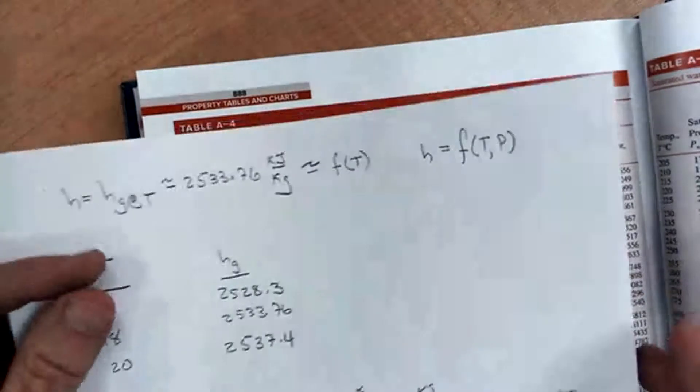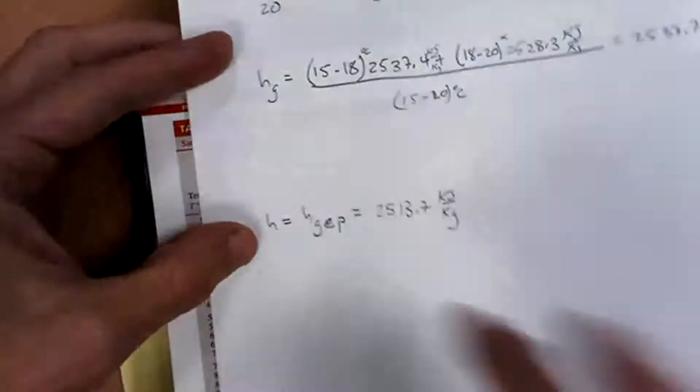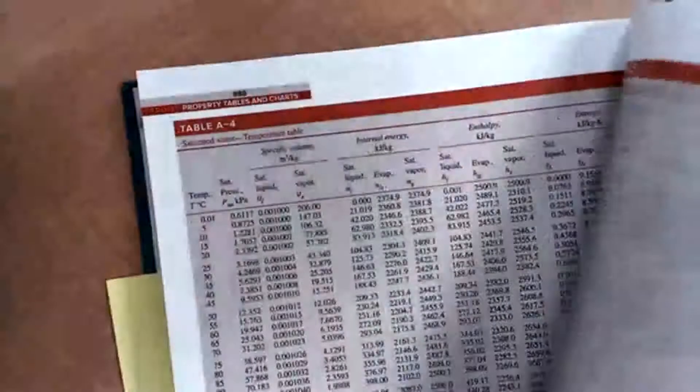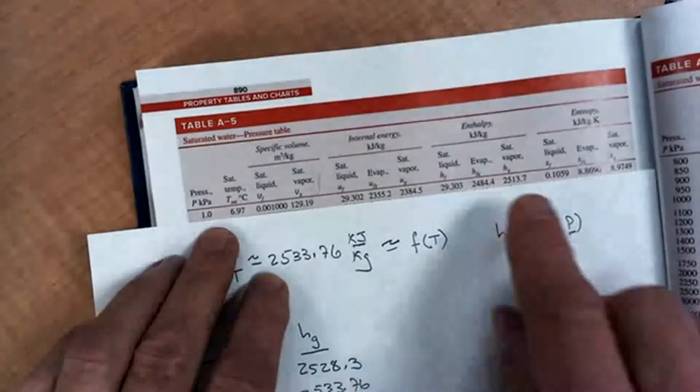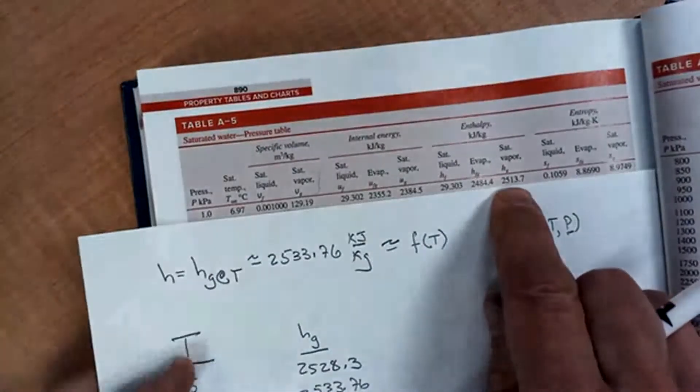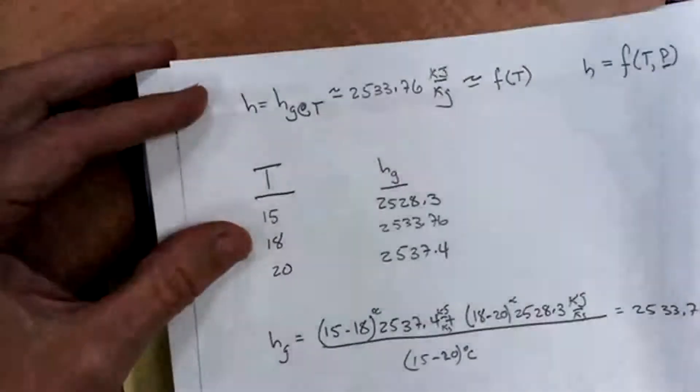If I had used the pressure, if I went to the h value, the saturated h value at one kilopascal, you'd see I'd be at 2513.17. So that's pretty far off from this 2533. This is the better estimate.